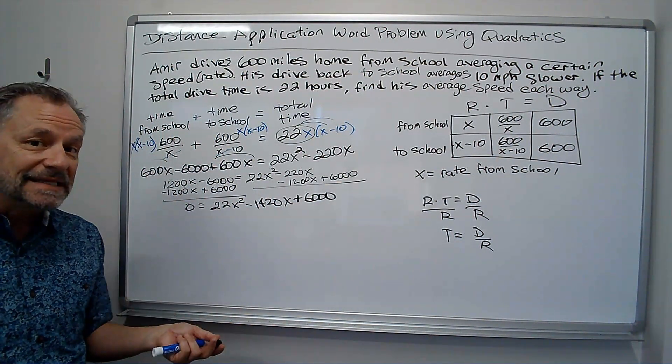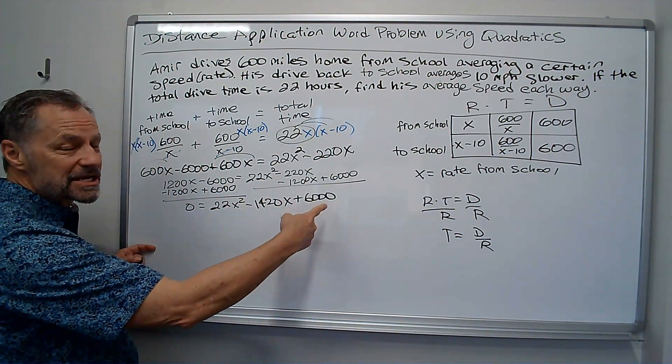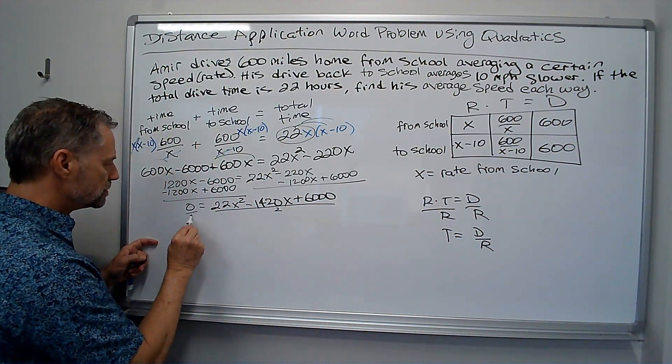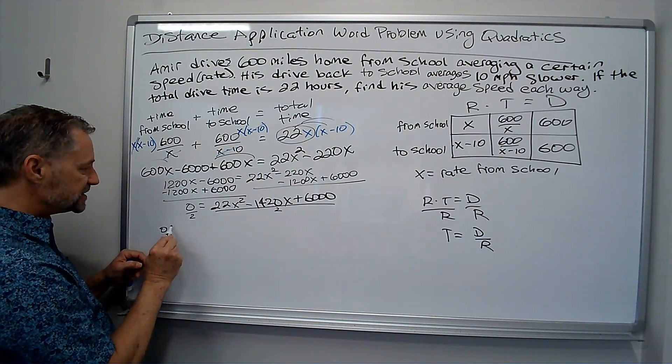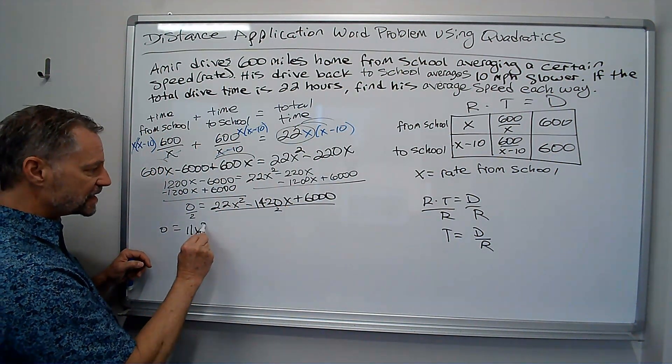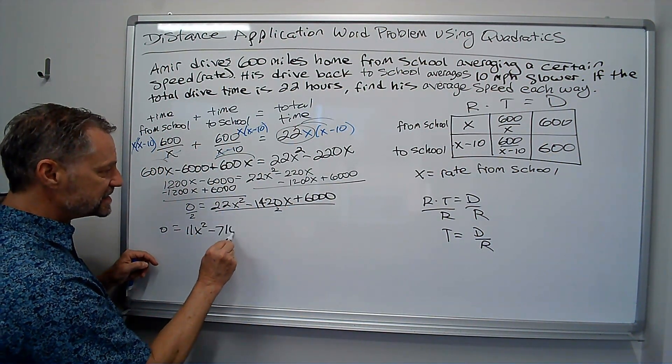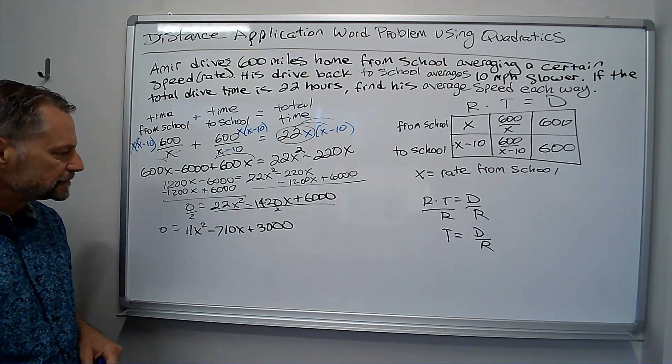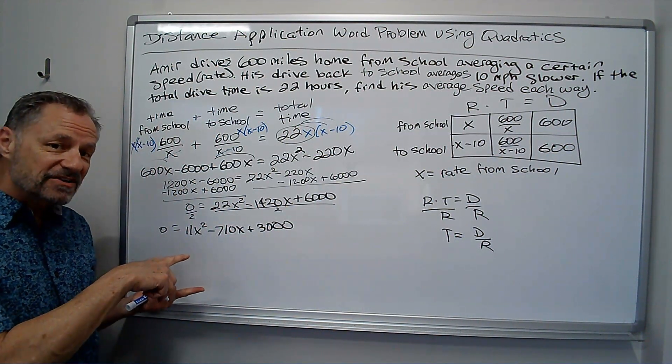And I get 22X squared minus 1,420X plus 6,000. Now, not really nice here. I can divide everything by 2 to make it a little smaller if I want to. And I get 0 equals 11X squared minus 710X plus 3,000. I don't want to try to factor that.